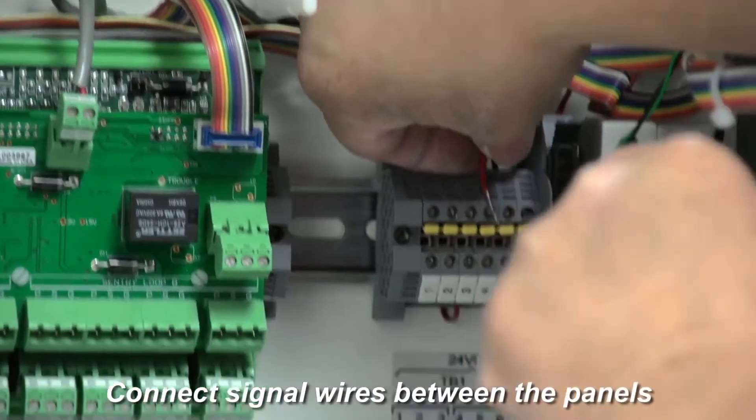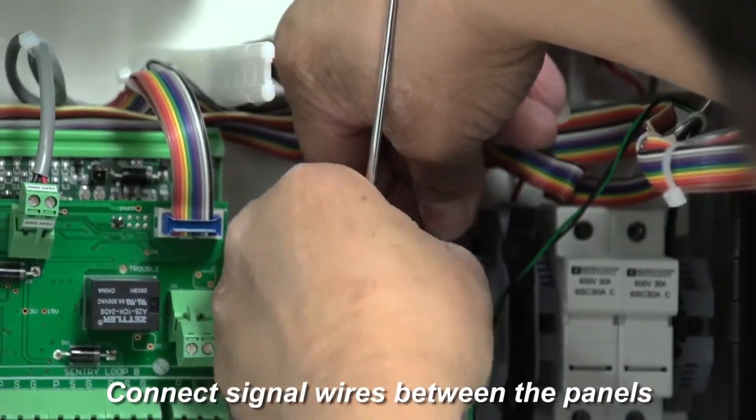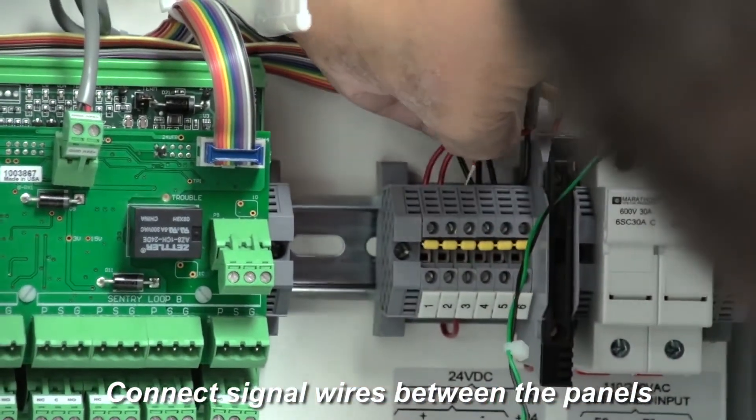Next, connect the signal cables between the two panels at the junction in the middle of the back panel following the instructions provided.